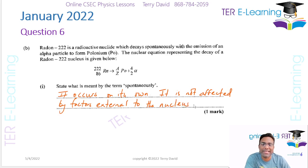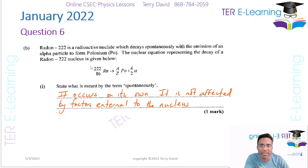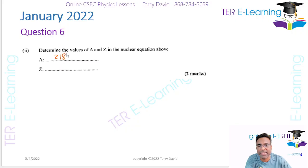The next thing they want is you to determine the value of A and Z. Now when you have a decay equation like this, what has to happen is that your total mass number on your left side must equal the total mass number on the right side. So that means that 222 on the left must equal A plus four. So therefore A has to be 222 minus four, and that here is going to give me 218. So this here is going to be 218. That's the answer for this here, 218, easy one mark.